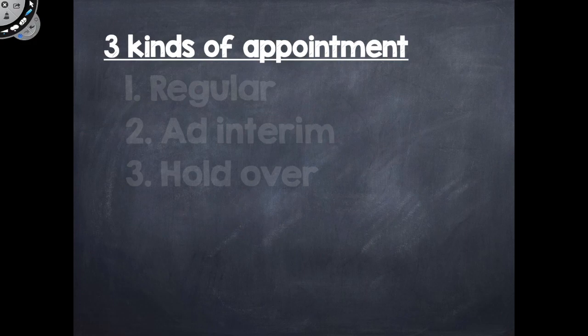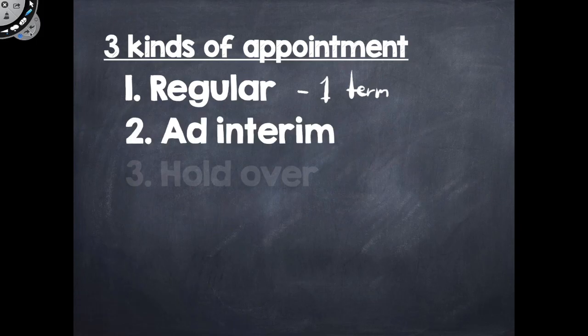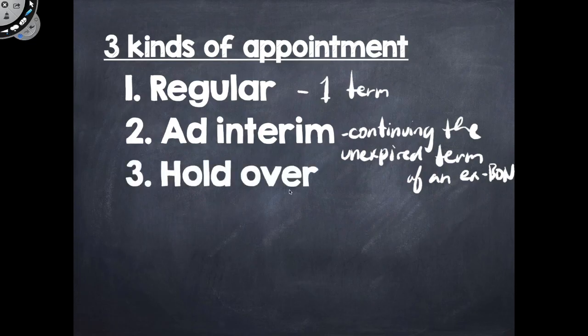And those are the three kinds of appointment. Regular appointment is being appointed for one term or for a period of three years. Ad interim appointment is when a newly appointed BON will just continue the unexpired term of a former BON. And the third one is staying at the position even after three years while waiting for a new appointee.